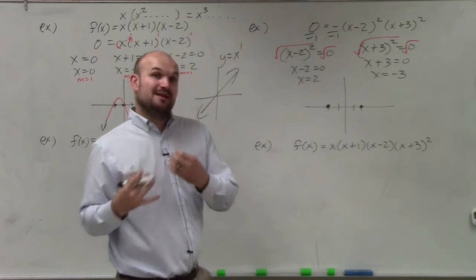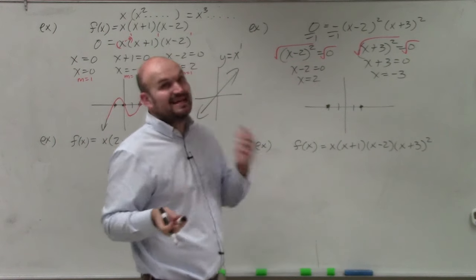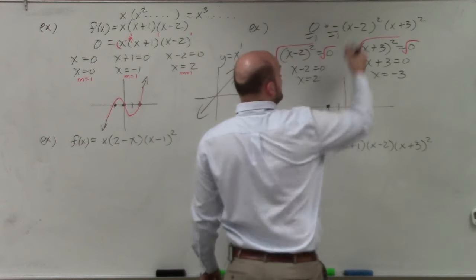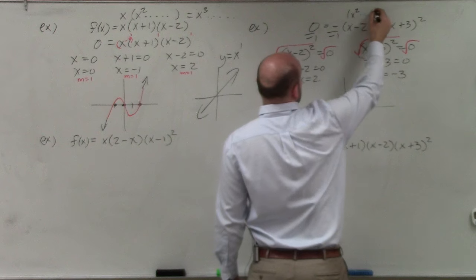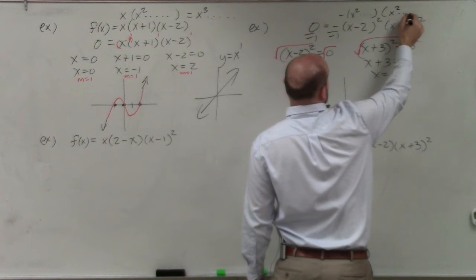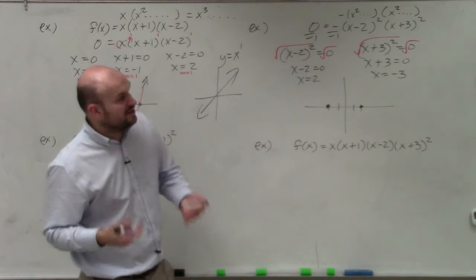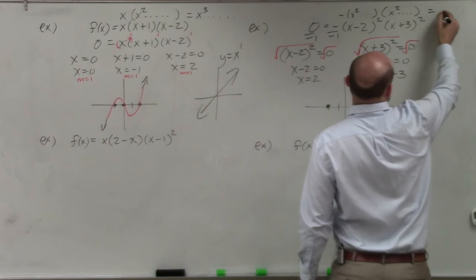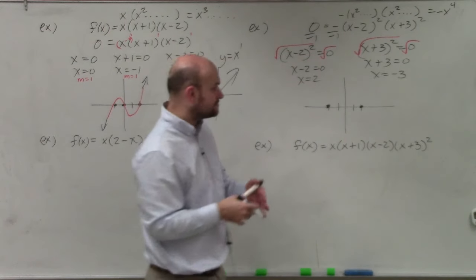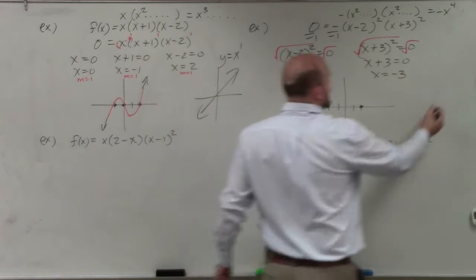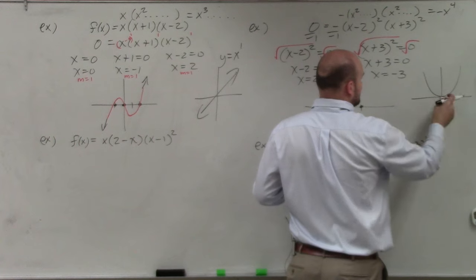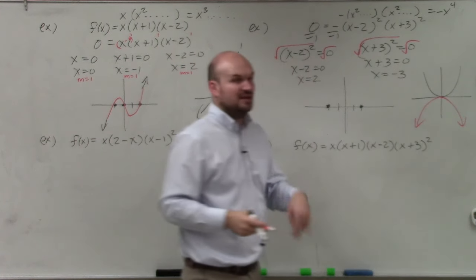Now let's figure out the end behavior. We need the degree and the leading coefficient. (x minus 2) squared gives x squared, and (x plus 3) squared gives x squared. Multiplying x squared times x squared gives x to the fourth, and with the negative out front it's negative x to the fourth. Since the degree is even and the leading coefficient is negative — like a flipped parabola — the end behavior is fall left, fall right.